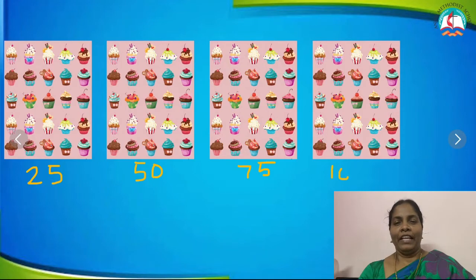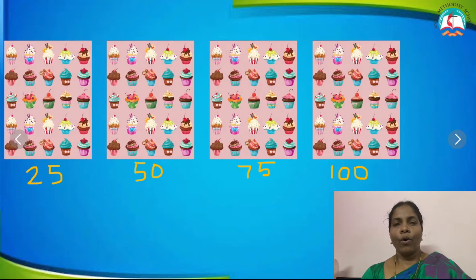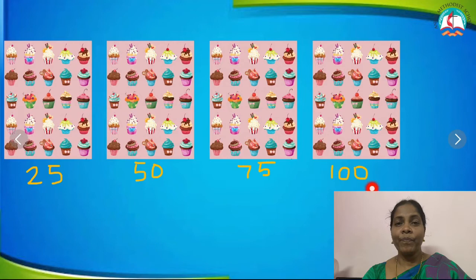Very good. Now children, do you understand? When we count all the 25s together — all 4 of the 25s together — we will get 100.